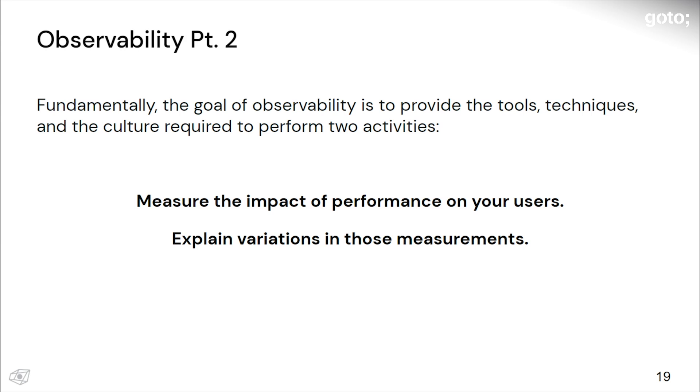Now why is it important to measure the impact based on users? Well, if you're doing performance work or you're getting paged, you better make sure that connects to a user in some way. If you're getting woken up at 3 a.m. because a disk that doesn't matter is running out of space, then you need to reconsider your alerting. Conversely, if you're spending a week unrolling loops and trying to tighten up some section of code, if that section of code isn't on the critical path and isn't actually contributing latency to a request, what are you doing with yourself? Now the tools will help you with the second part—explaining the variations in those measurements—but the first one, having that user-focused mindset, that's really a function of your culture.